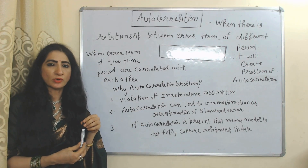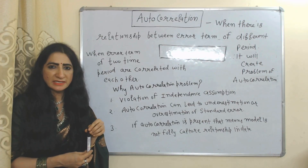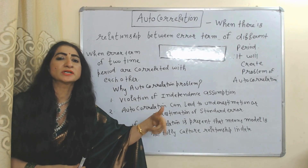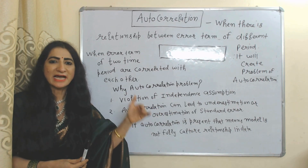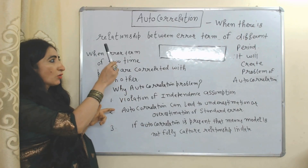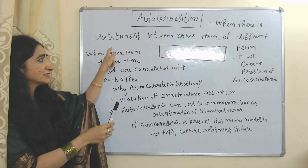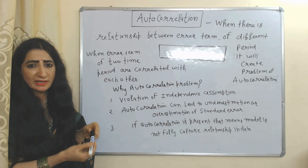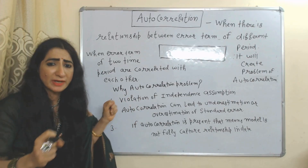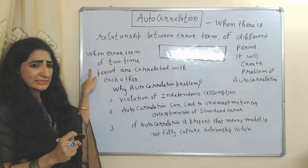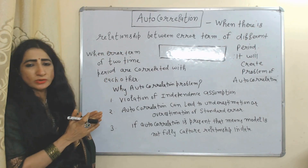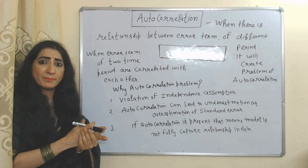Now we are going to talk about the next problem: autocorrelation. In simple linear regression, we assumed the value of the error term in period 1 is not related to the value of the error term in period 2 — there is no relationship between error terms of different periods. But autocorrelation means there is a relationship between error terms of different periods, or we can say that when error terms of two periods are correlated with each other, it is called autocorrelation.